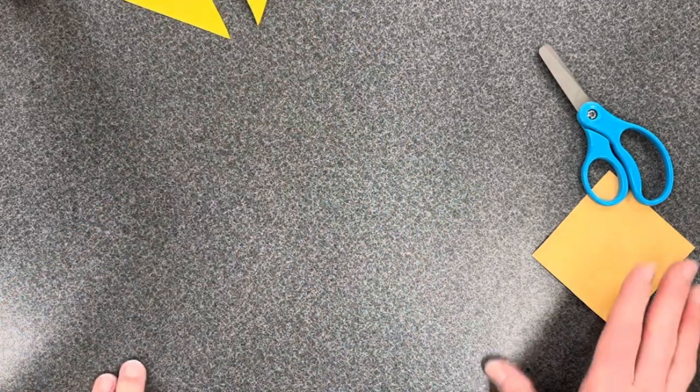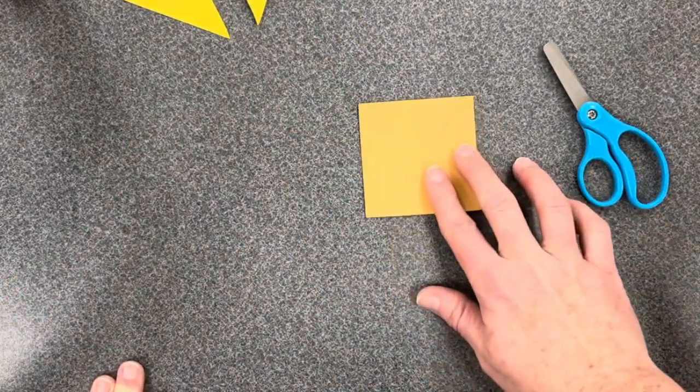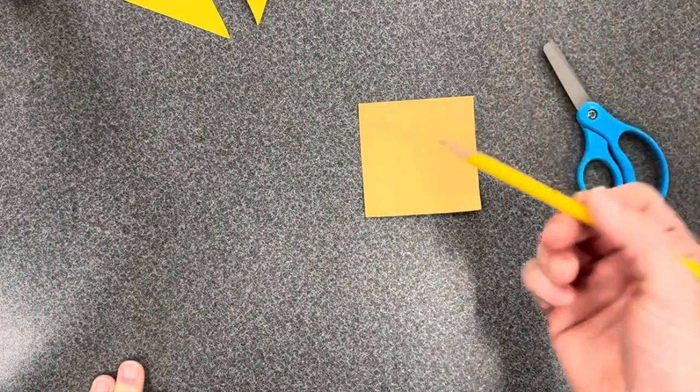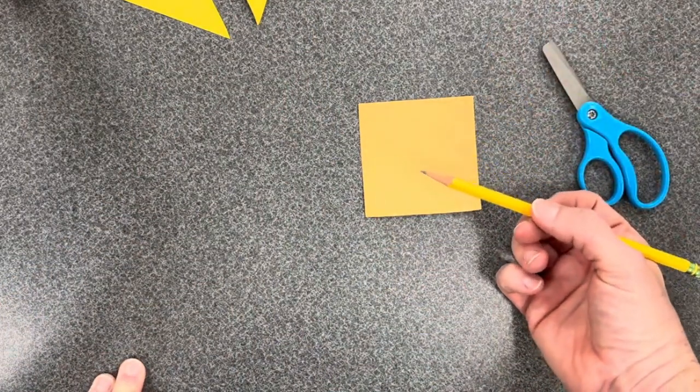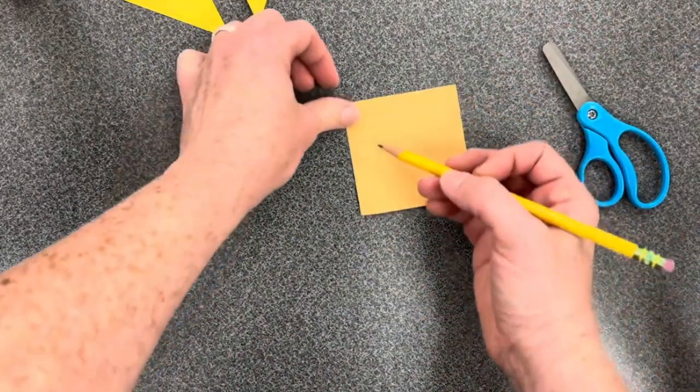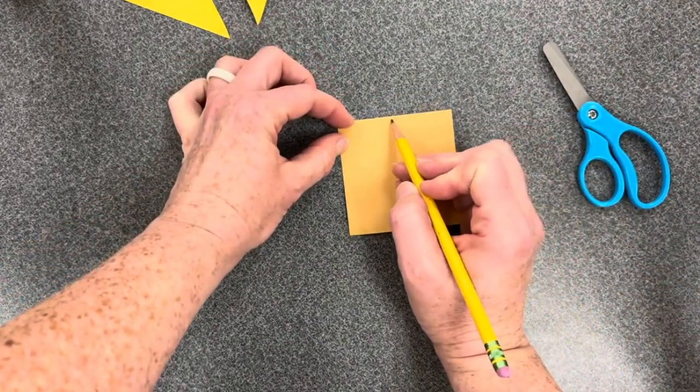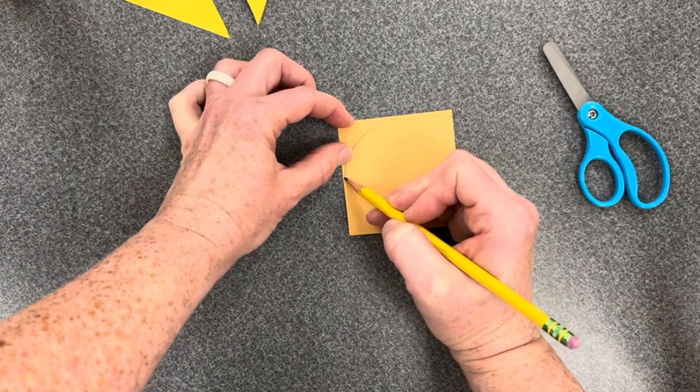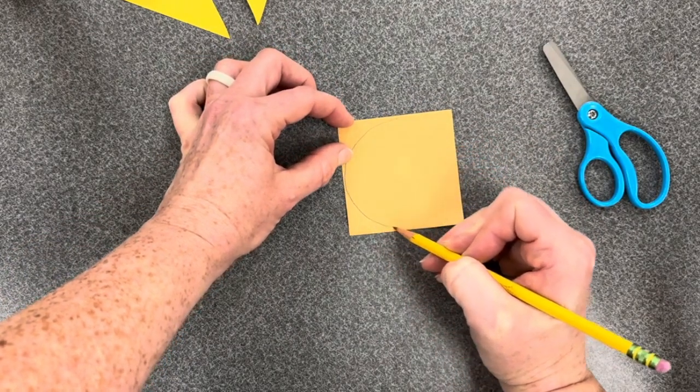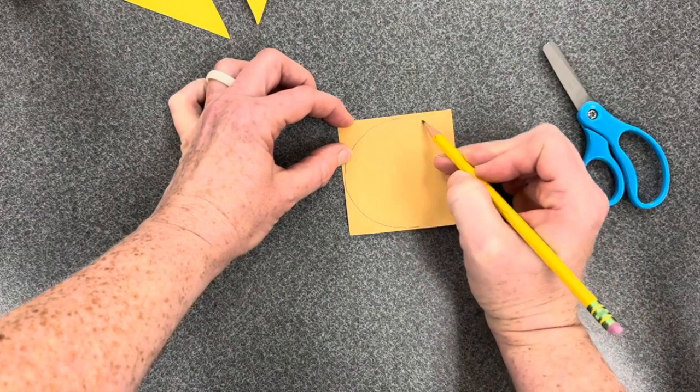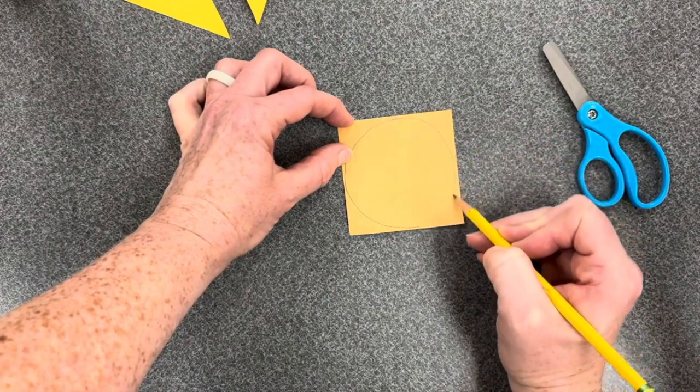And then our last shape today will involve cutting a circle. I like to draw my circle before I cut it out. So I'm going to use curvy lines today. And my challenge is to make sure that the curves of my circle touch all four sides of my square.